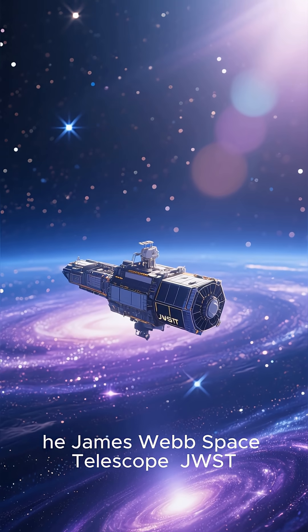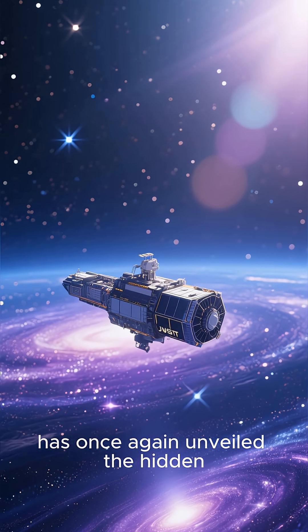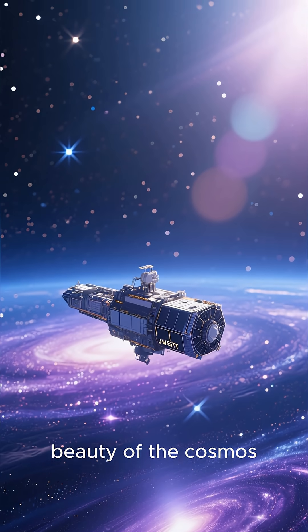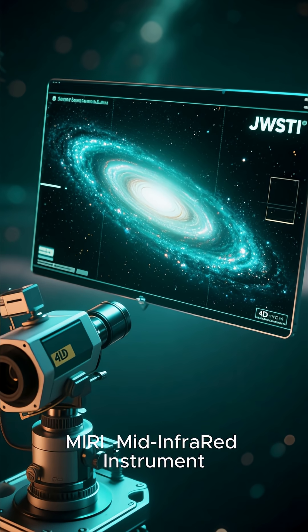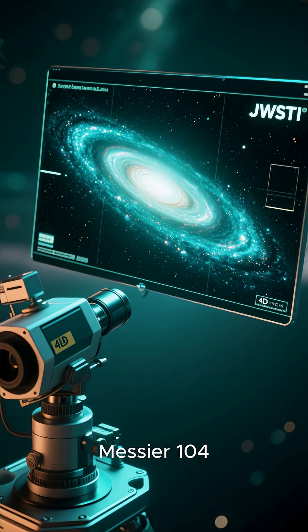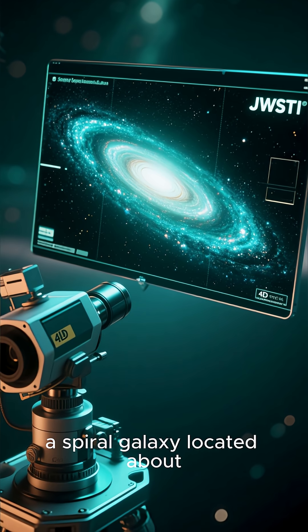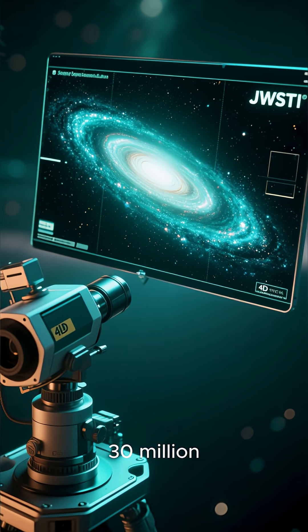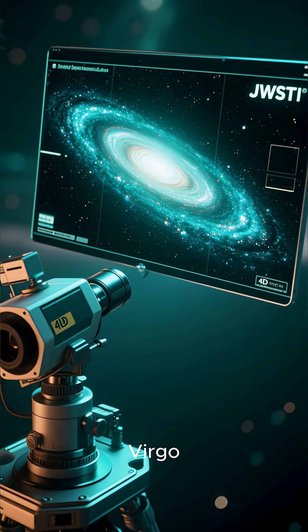The James Webb Space Telescope has once again unveiled the hidden beauty of the cosmos. Using its MIRI mid-infrared instrument, Webb captured a breathtaking new image of the Sombrero Galaxy Messier 104, a spiral galaxy located about 30 million light-years away in the constellation Virgo.